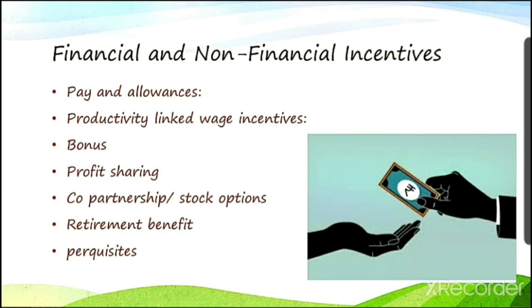Next are co-partnership and stock option. At the end of the year, profits in the organization are distributed among employees as financial incentives. Many companies offer a share in management or participation in management along with a share in profit to their employees as an incentive. Co-partnership and stock option means you can make your employee a co-partner or offer shares through a stock option.